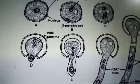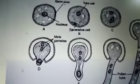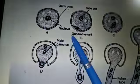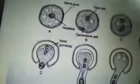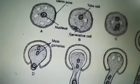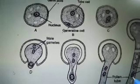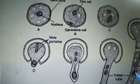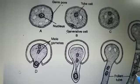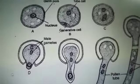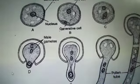This structure from diagram B to G represents the pre-pollination development. That means before pollination, this structure must be developed, and it is called pre-pollination development.